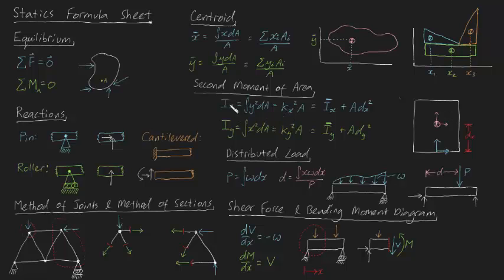Now rather than solve for the second moment of area directly using this formula, we can apply this formula just here, which makes use of the radius of gyration. So if we have k subscript x, our radius of gyration, we can find our second moment of area quite easily by applying k subscript x squared times by A, where A is the total area of your shape. Typically, k will be given to you in some form of table.